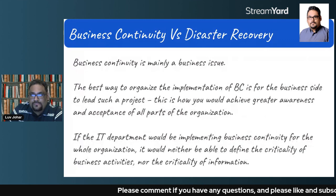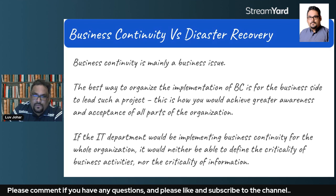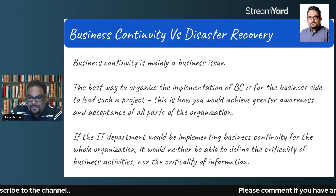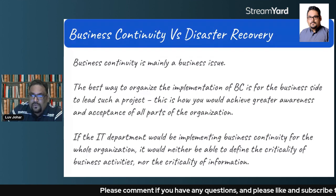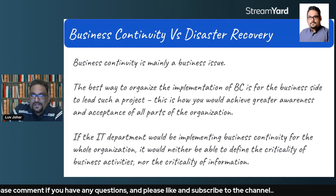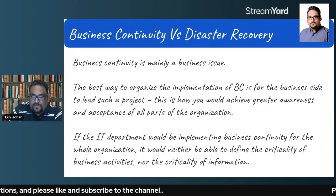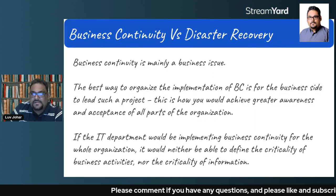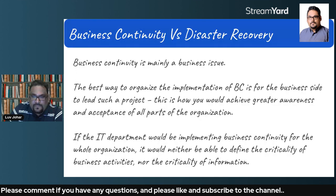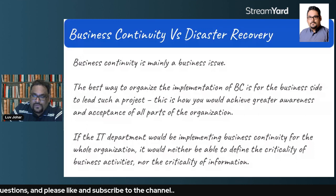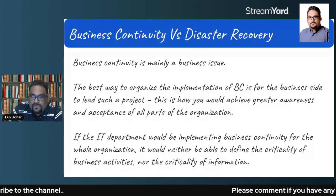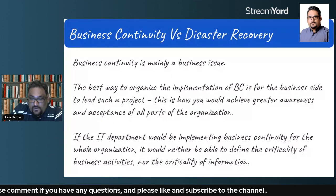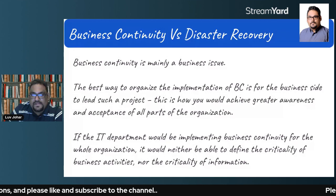When we talk about implementing business continuity, it is mainly a business-led exercise. It needs to be led by business heads, department heads, the executive team, and board-level people. Only then will the remaining parts of the organization be able to accept the overall plan. These people are also best positioned to understand criticality from a business standpoint — IT alone would not be able to define that. Criticality from a business perspective is better defined by department heads, functional heads, and C-level executive teams.